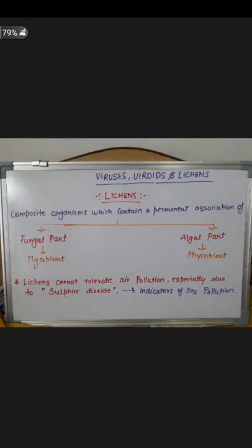Lichens are composite organisms which contain a permanent association of a fungal part — the mycobiont — and an algal part. This is a composite association between fungi and algae. Lichens cannot tolerate air pollution, especially due to sulfur dioxide. They do not tolerate SO2, so they are used as indicators of air pollution.